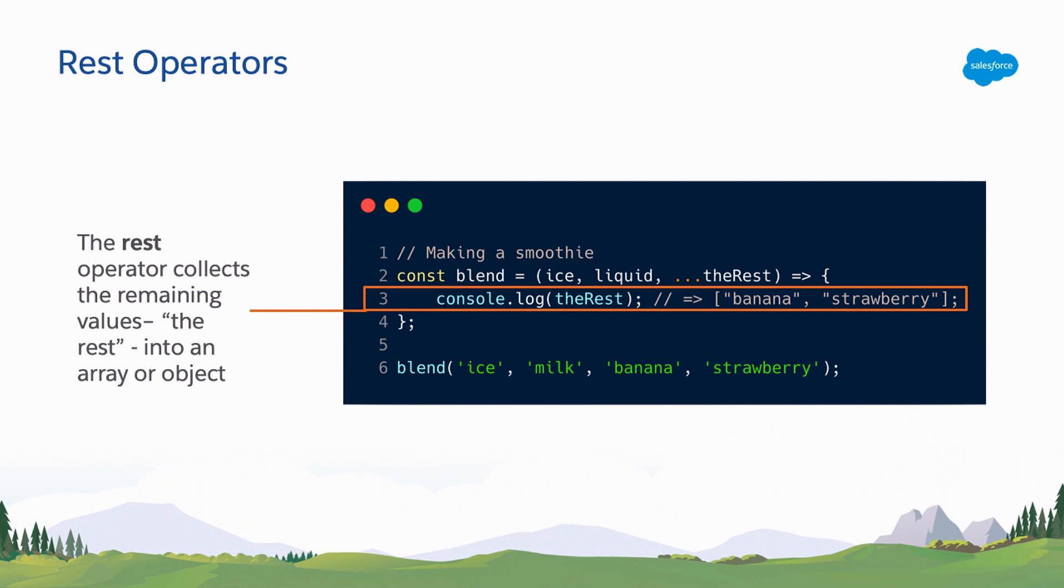So rest operators, you can think of them as collecting the remaining values, the rest, into an array or an object. Okay. So let's take our blend function here. We are making a smoothie and whenever we blend something, we always need ice and liquid and we don't care about whatever else gets thrown in the blender, right? We'll blend it. So we can accept an arbitrary number of remaining arguments to our function. And when we call the blend function, we're calling it with ice, milk, that's our liquid, banana, and strawberry. And if we look at the value of the rest inside of our function, we see that it turns that into an array of banana and strawberry. So if we had a whole bunch of arguments appended here, it would collect all of those into an array for us. A more practical example of where you might use this is if you're trying to do a more abstract function and you don't know how many arguments that someone's going to pass in, a rest operator is really handy for that use case.